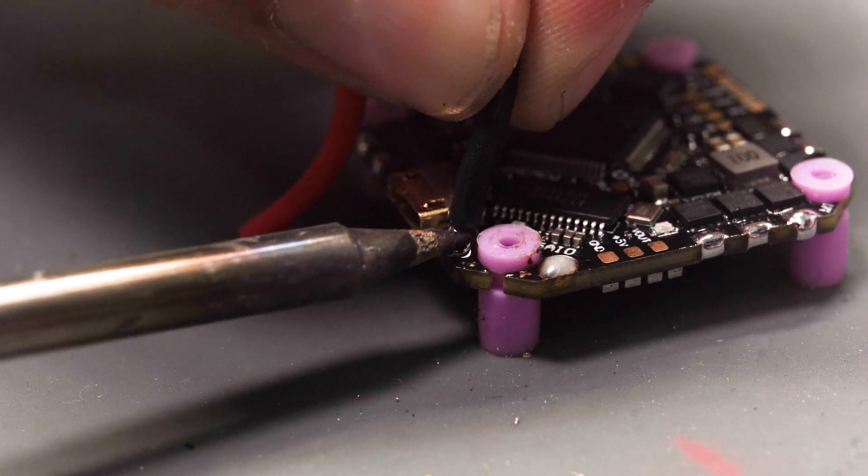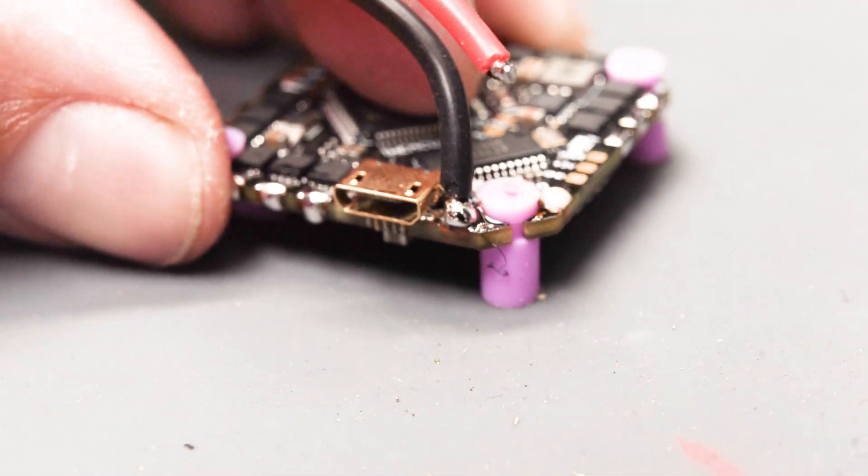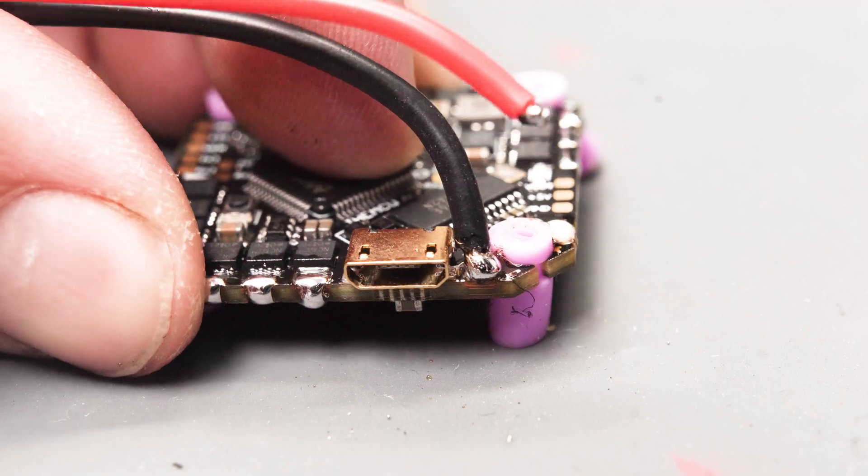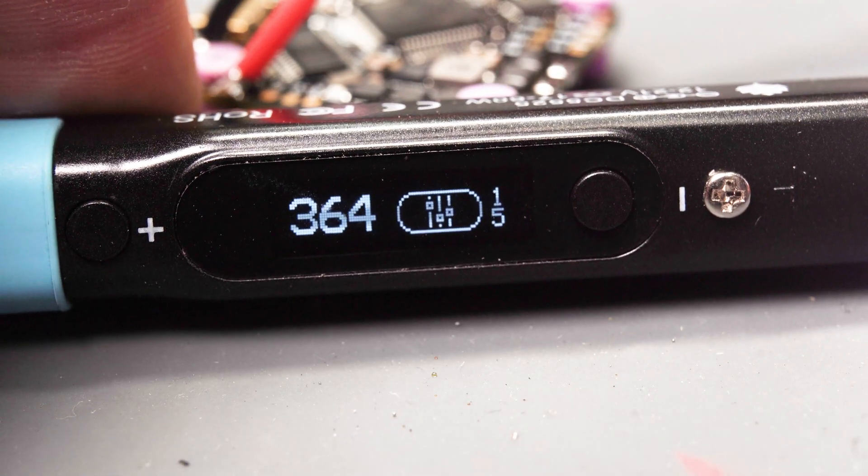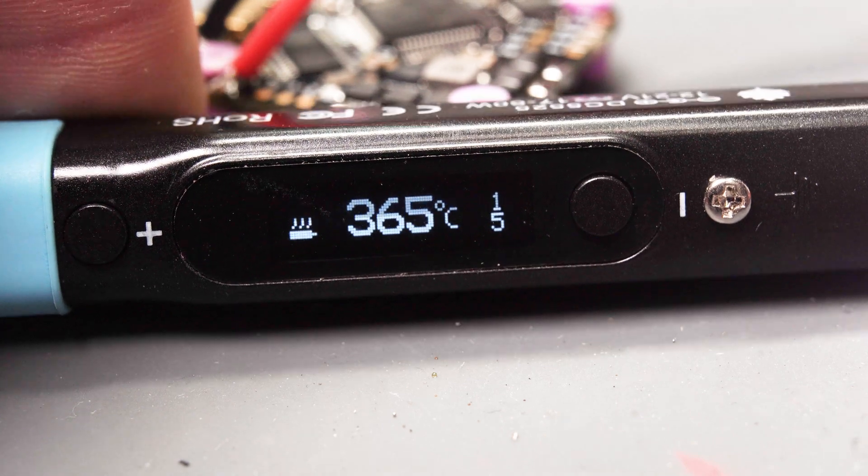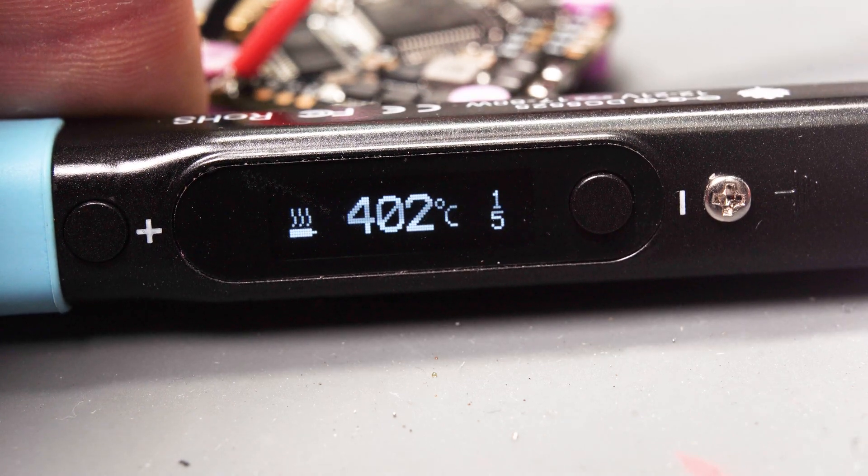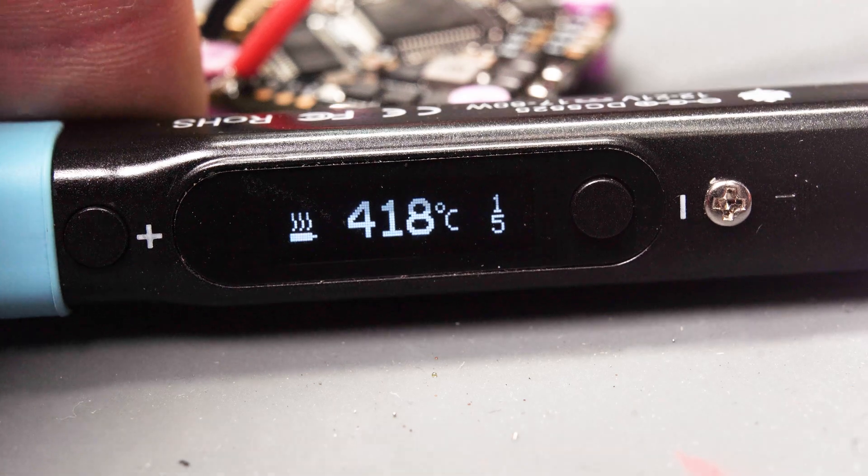For the battery leads we definitely want to be the max temp and the ground pad is usually the one that takes the heat up longer as it's got more traces going throughout the board. So yeah don't be at 350 be at 450 or as close as you can to it. 420 is never a bad number.